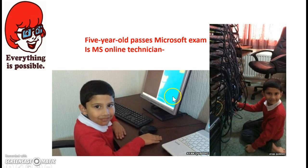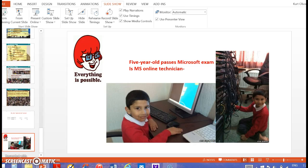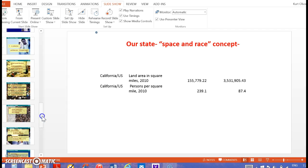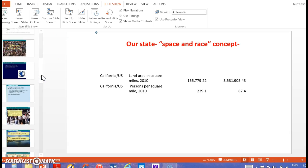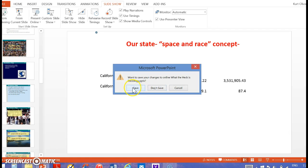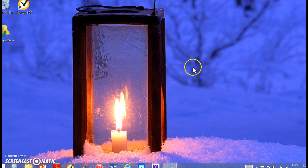I saw this little thing in the news earlier today and stuck it in here to help motivate you for the first part of school. This little kid is five years old and he passed his Microsoft exam — he's an online technician currently working for Microsoft. So if he can do that, we sure as heck can make more out of ourselves. Pay attention to the theory outline I'll have later on. That's our first PowerPoint — go through the demography section because it's fascinating. Click through it yourself.